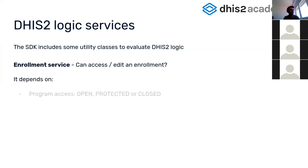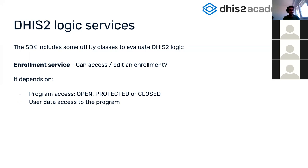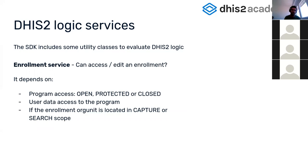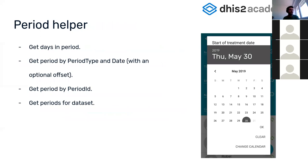The enrollment service checks if a user can access or edit an enrollment. This depends on the access level of the program — open, protected, or closed — the user's data access to the program, and depending on the access level, whether the organization unit is in the capture scope or in the search scope.